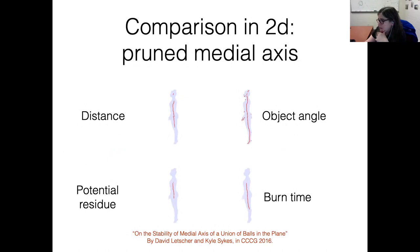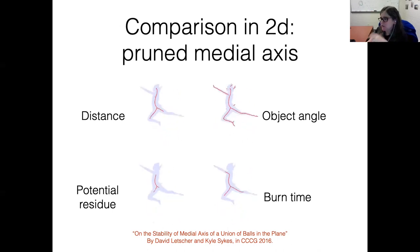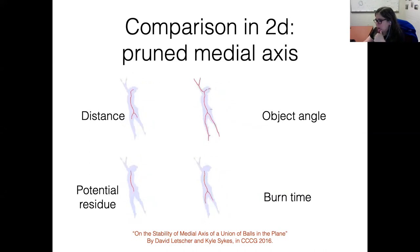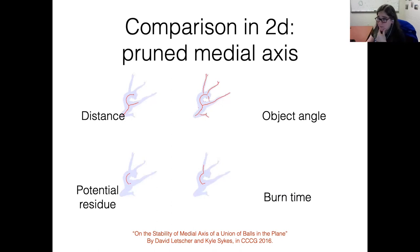Here's distance to the boundary versus object angle versus potential residue versus burn time for a moving 2D shape — just a proof of concept implementation. This was from a paper by Dave Letcher and my PhD student Kyle Sykes, where they proved a notion of stability showing that this pruned medial axis was a fairly nice object.